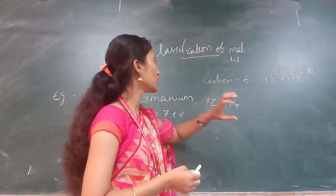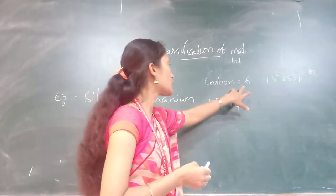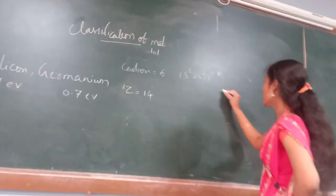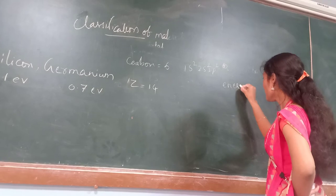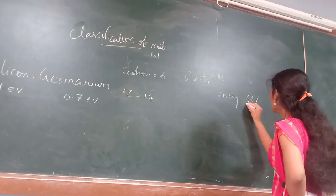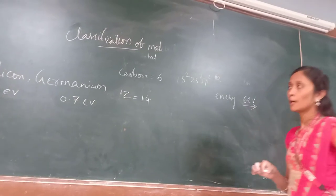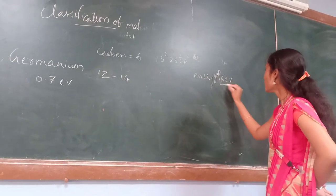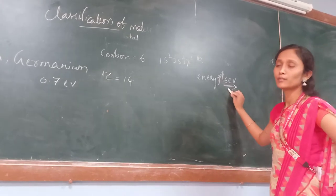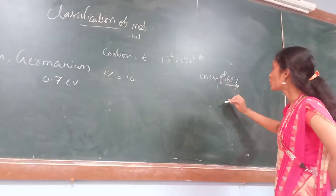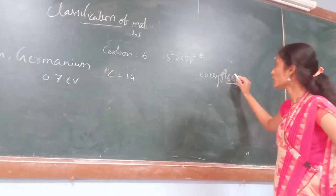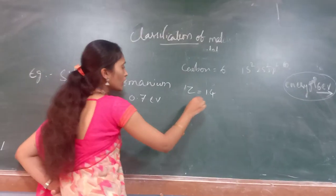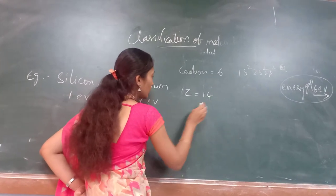The space between the conduction band and valence band is the energy gap. For carbon, the energy gap is 6 electron volts — this gap is very, very high. So even if we give an external source, it won't conduct, meaning there is no flow of electrons from one state to another. Carbon is a non-conductor.